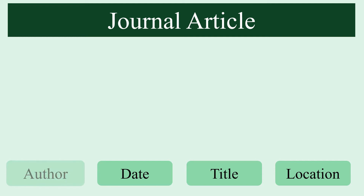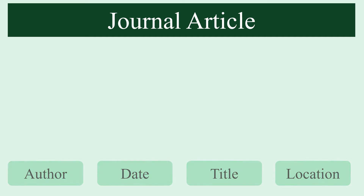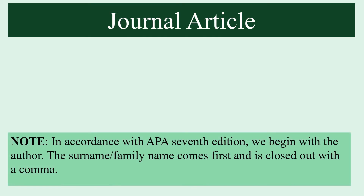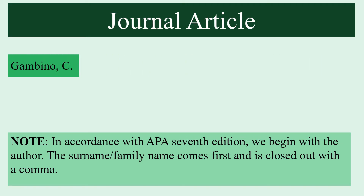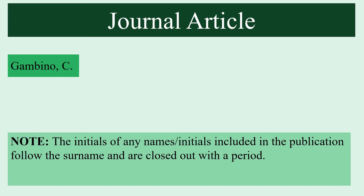That means we begin with the author, follow that with the date, the title of the work, and then the location. In accordance with APA 7th edition we begin with the author. The surname or family name will come first and will be closed out with a comma — in this case, Gambino comma. The initials of any names included in publication will follow the surname and will be closed out with a period — in this case, C period.